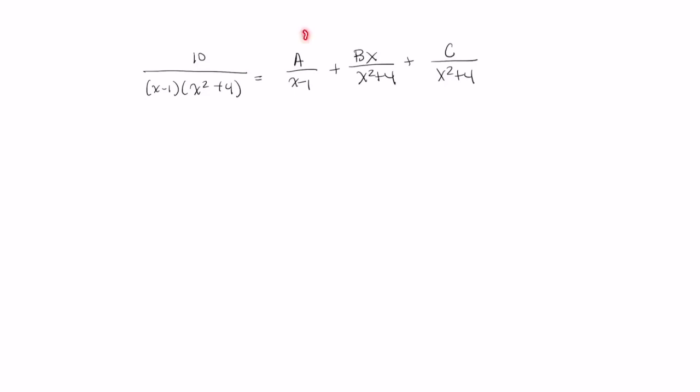So if you notice, I have a single A for the linear term. And then for the irreducible quadratic, I need two fractions here. I need the irreducible quadratic in the denominator of some linear thing. So in this case, it's Bx. And I also need the irreducible quadratic in the denominator with some constant term in the numerator.